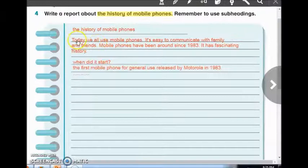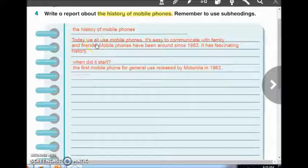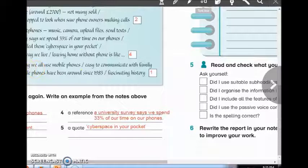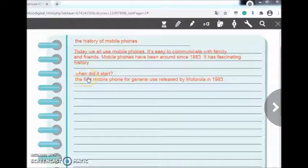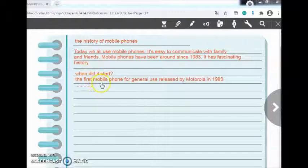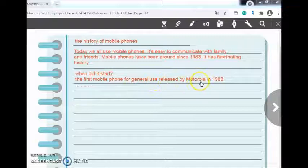For example, as you can see here, we have the heading, the history of mobile phones. And after that, we wrote an introduction. And we get it from the notes. From here. Introduction. And after that, we put a subheading. When did it start? And we get the information and the notes from the previous activity. The first mobile phone for general use released by Motorola in 1983.